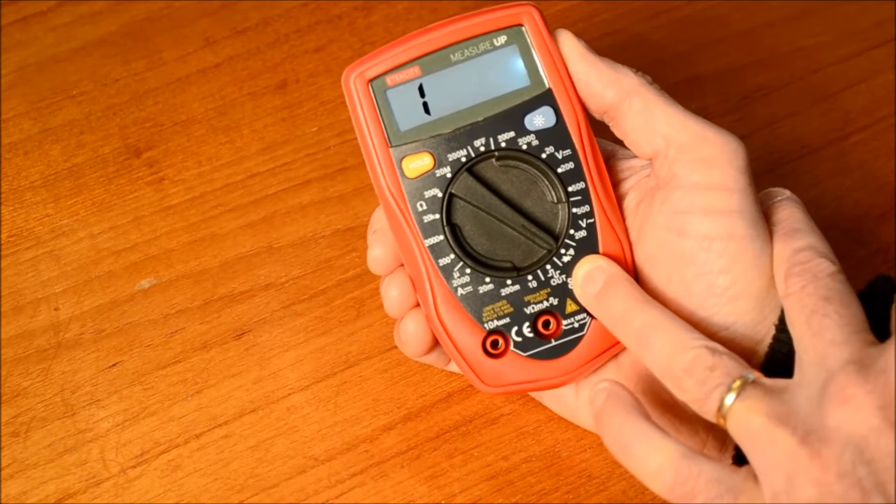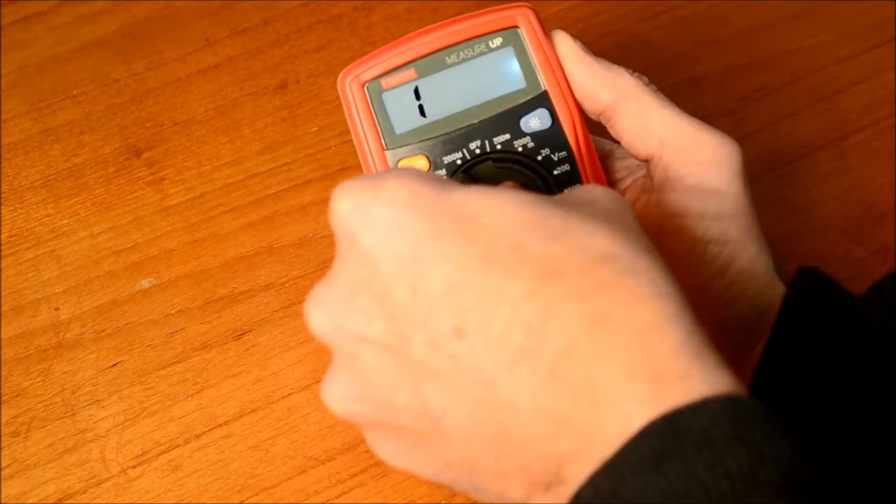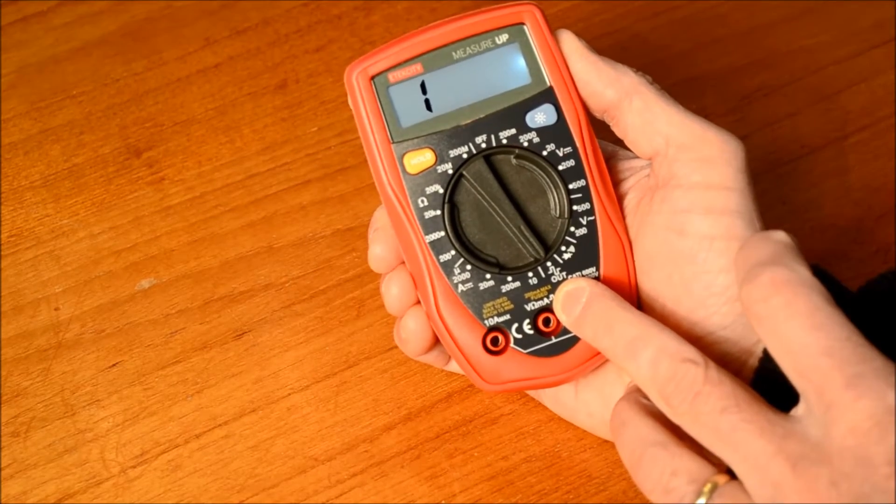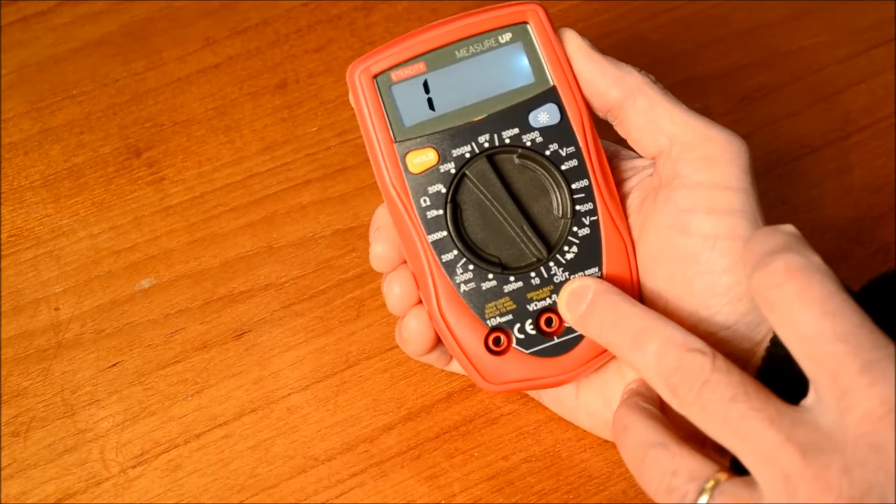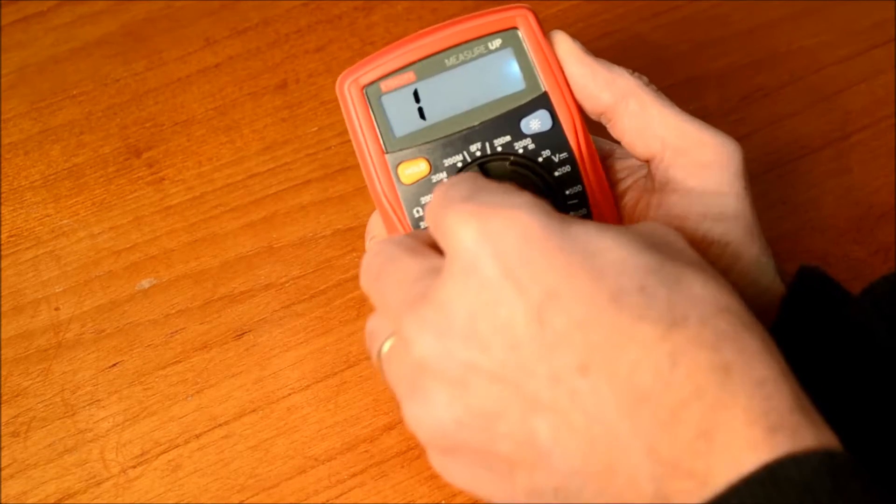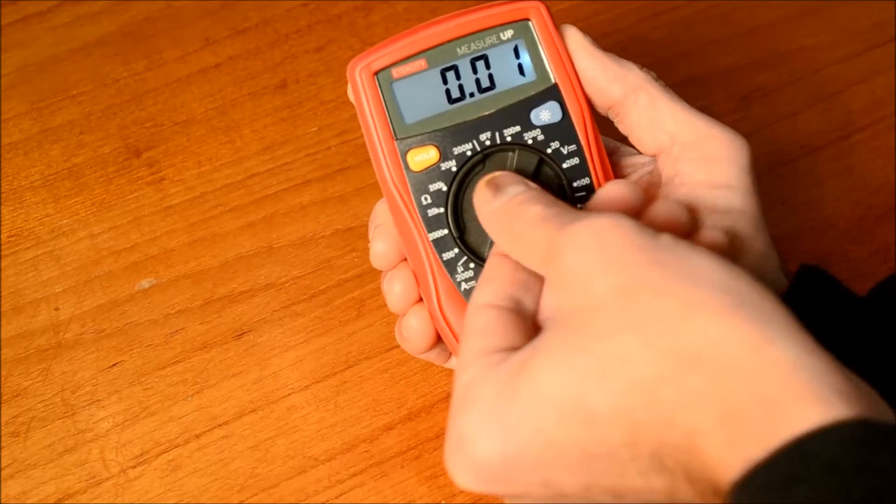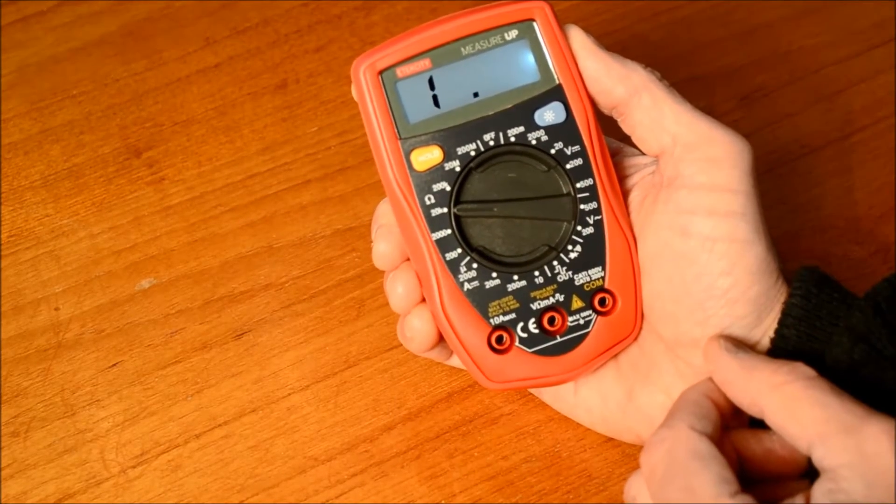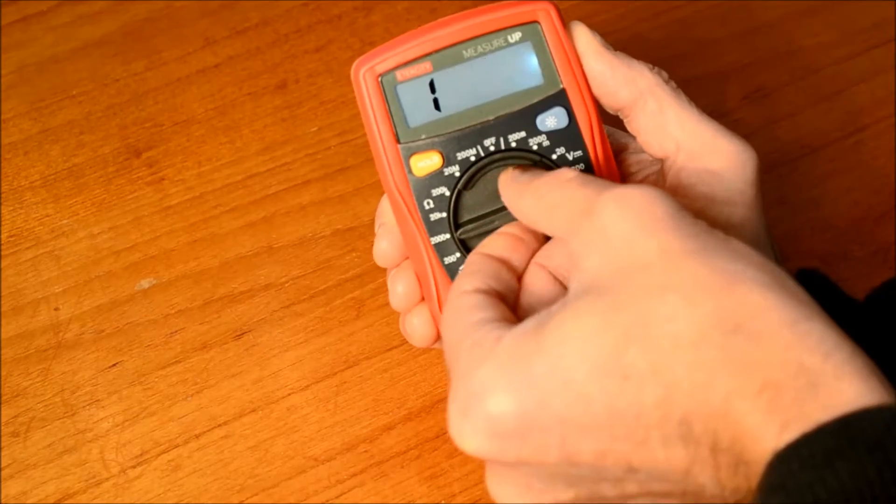It also can do diode and transistor checking. It can also output a square wave which is very useful for measuring or testing out electronic circuits, for example speaker circuits. It can also measure DC amperage and lastly it can measure all different types of resistances from 200 ohms up to 2 mega ohms.